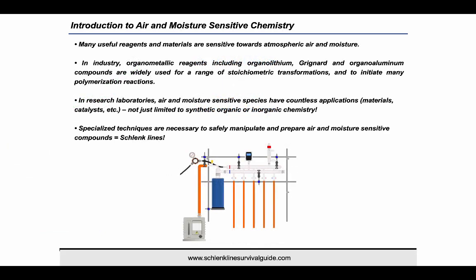Many of the reagents that we use are sensitive towards atmospheric air and moisture. Despite this, they are used widely. In industry, for example, organometallic reagents are widely used for a range of stoichiometric transformations or to initiate many polymerization reactions. In research labs, air and moisture-sensitive species have countless applications, and they are not just limited to synthetic organic or inorganic chemistry. This means that specialized techniques must be applied to safely manipulate and prepare air and moisture-sensitive compounds, and this is why we need Schlenklines.